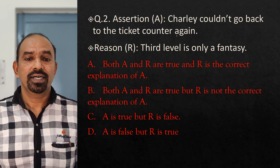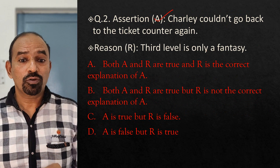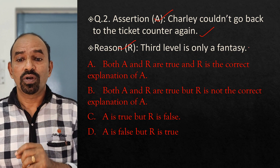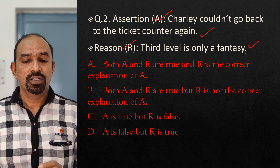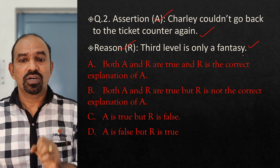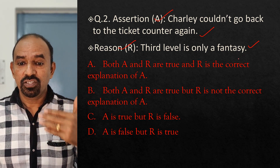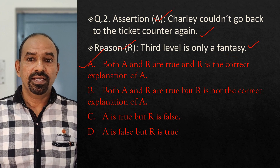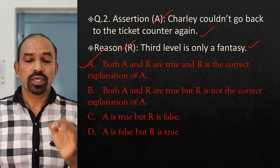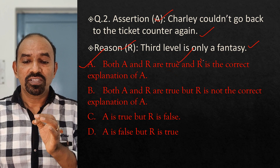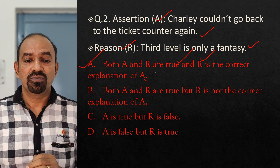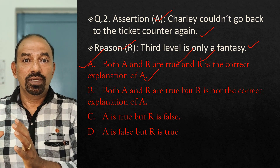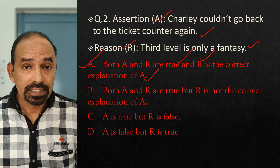Question number 2 has the same Assertion: Charlie couldn't go back to the ticket counter again. The Reason here is: The third level is only a fantasy. Both statements are correct and the second statement is the explanation of the first one. So A is the correct option — both A and R are true and Reason is the correct explanation of A.